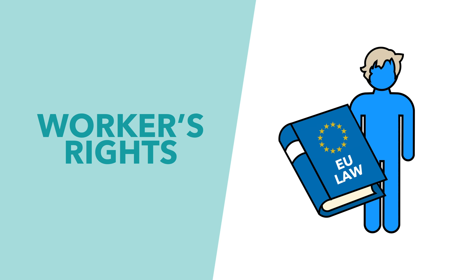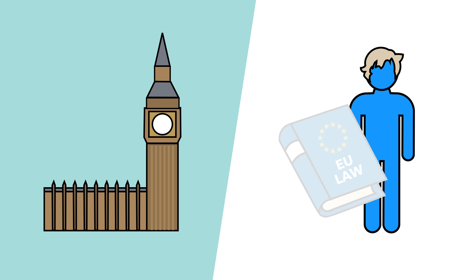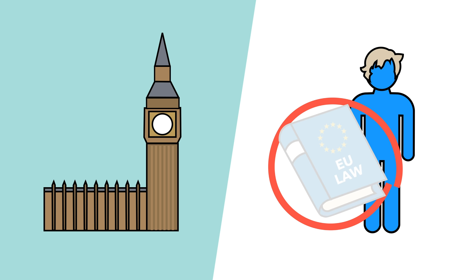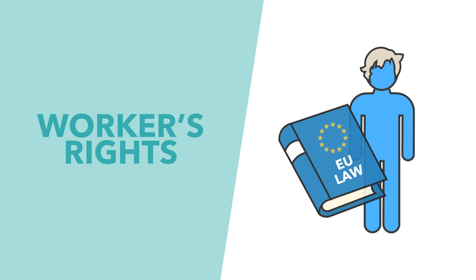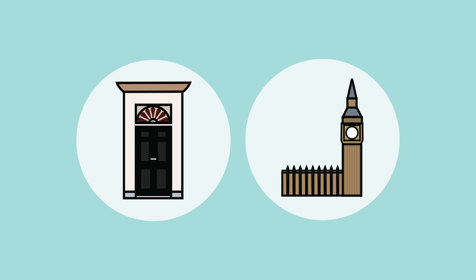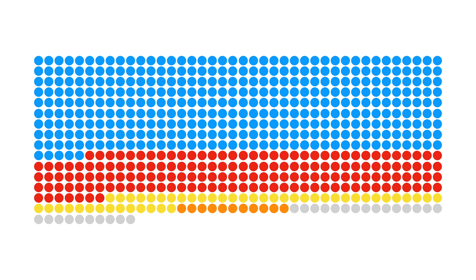The third change is that the section on workers' rights has been removed. Previously, if the government wanted to diverge on EU workers' standards, they had to make a statement to parliament confirming that yes, they were departing from EU standards, as well as giving the reason they wanted to do that. Now, under the new rules, they don't have to give notice if they do this. The section protecting workers' rights was introduced as a concession to try and tempt Labour MPs to vote for the deal, but now the government has a stonking great majority, they don't need any so-called sweeteners.